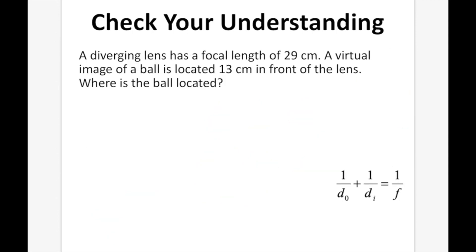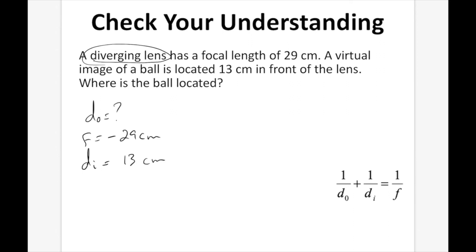Check your understanding. A diverging lens has a focal length of 29 cm. A virtual image of a ball is located 13 cm in front of the lens. Where is the ball located? That's our DO — the unknown. The focal length is negative 29 cm (diverging lens). The virtual image means DI is negative 13. Pause the video, plug the numbers into the formula, and answer the question.